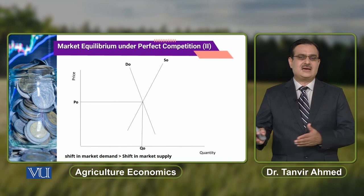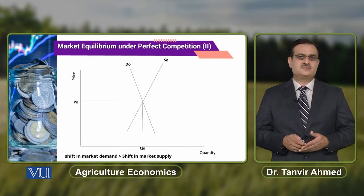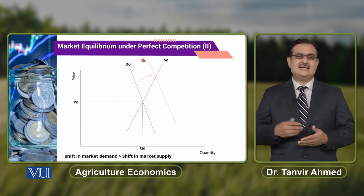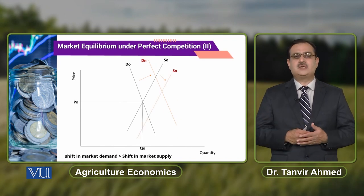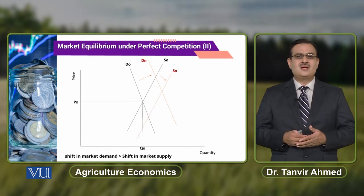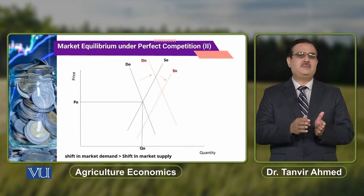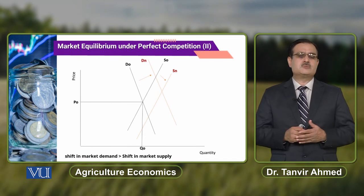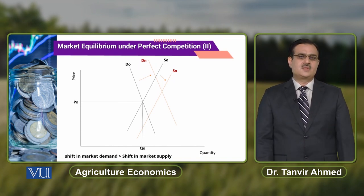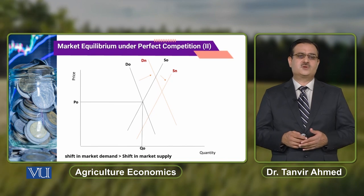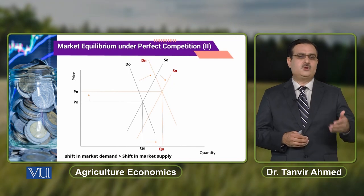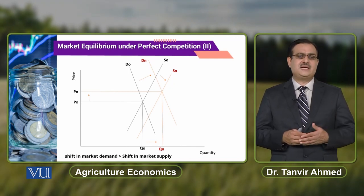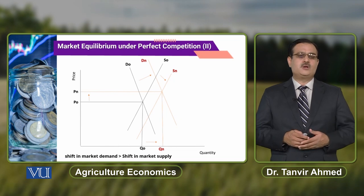Again, there are simultaneous shifts in demand and supply curves. Demand increases and supply also increases, with the supply curve shifting downward. Now comparing the shifts between demand and supply, we can see that the shift in supply is less than the shift in demand. In this case, there is an increase in equilibrium quantity, but when we look at equilibrium price, there is an increase in equilibrium price.